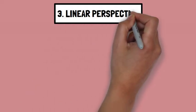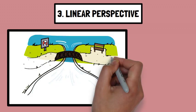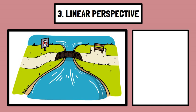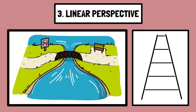Number three, linear perspective. Parallel lines appear to converge as they recede into the distance, creating a sense of depth. Railroad tracks seem to meet at the horizon even though they remain parallel in reality.